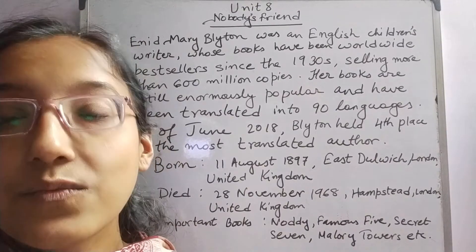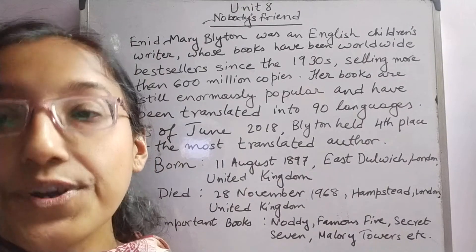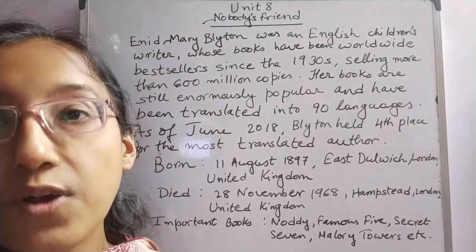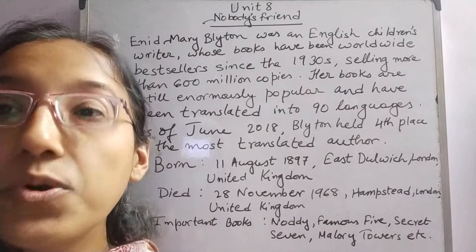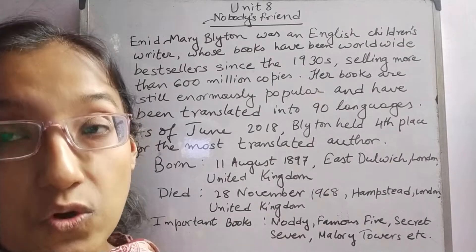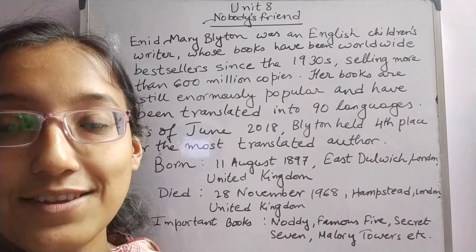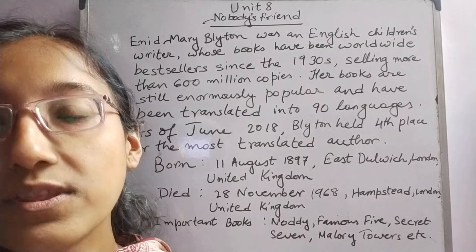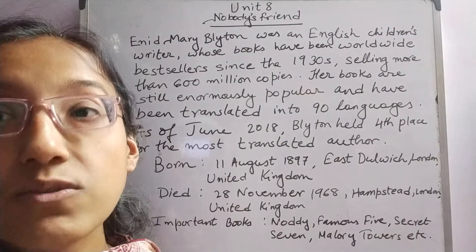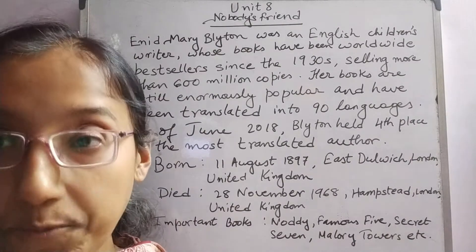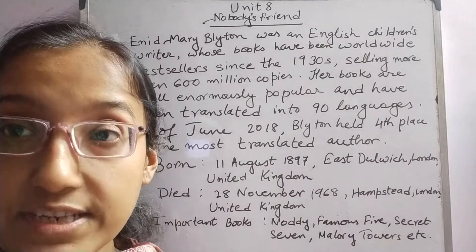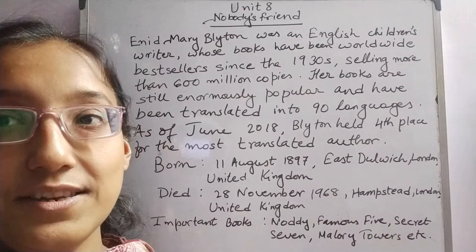Hello my dear students, welcome back to your English class. Today we will start a new poem from your Marigold book for class 5. The name of the poem is Nobody's Friend. Before going into the details of the poem, let's know some facts about the poet Enid Blyton.